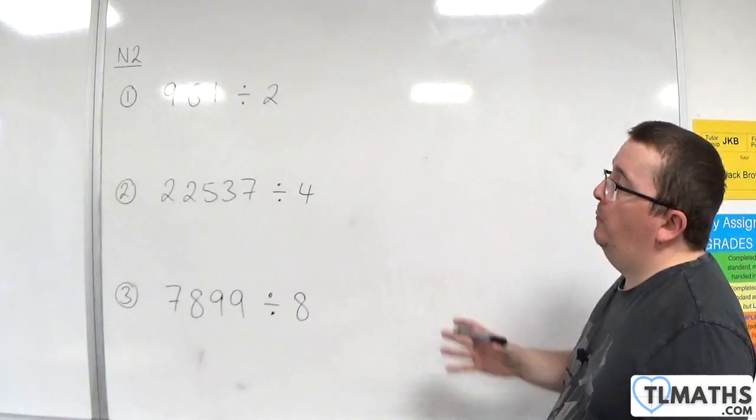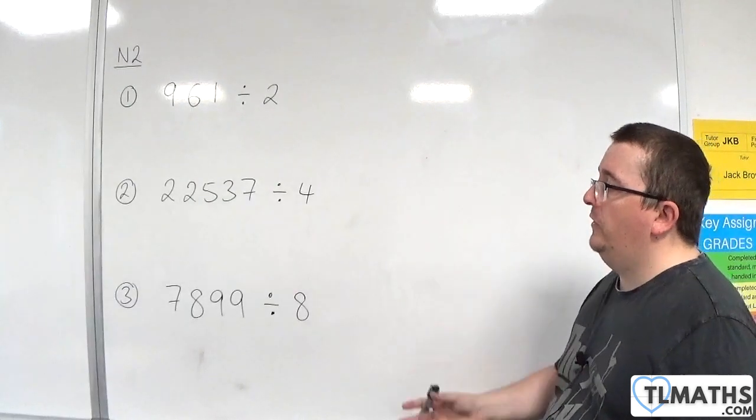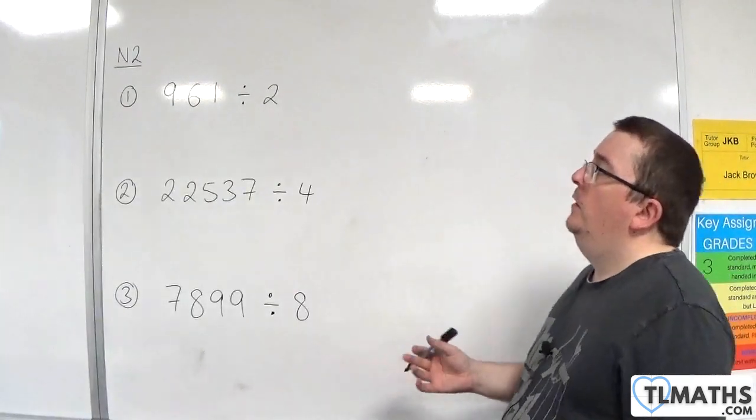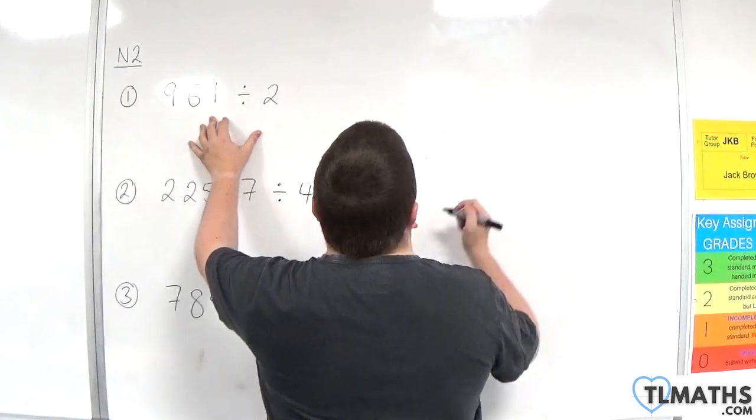In this video, I want to go through three more examples of going into decimals when we divide. So 961 divided by 2 to start off with.